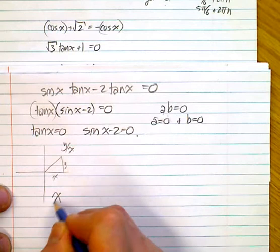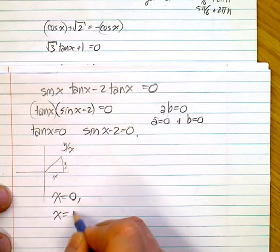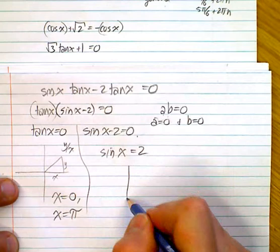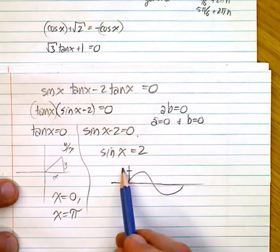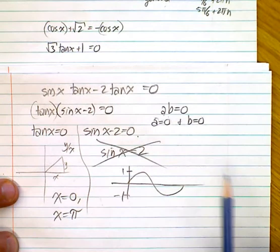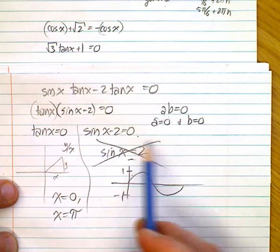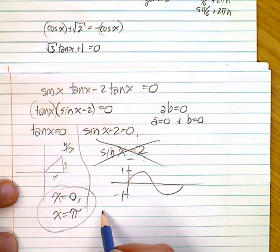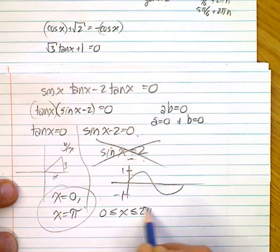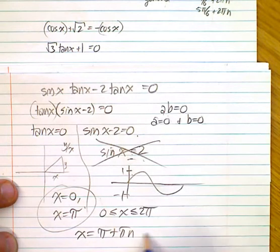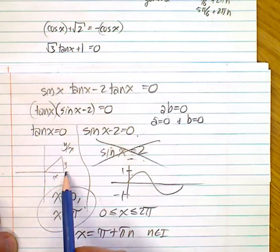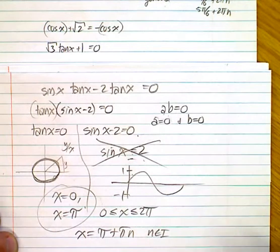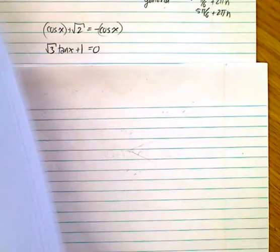For tan(x) = 0: since tangent is y/x, we need y = 0. Looking at the unit circle, y = 0 at x = 0 and x = π. For sin(x) = 2: the sine function only ranges from −1 to 1, so it never reaches 2 — this equation has no solution. Our two solutions over 0 to 2π are x = 0 and x = π. The general solution is x = 0 + πn, since it occurs every half revolution.